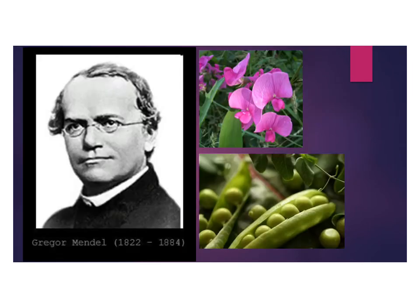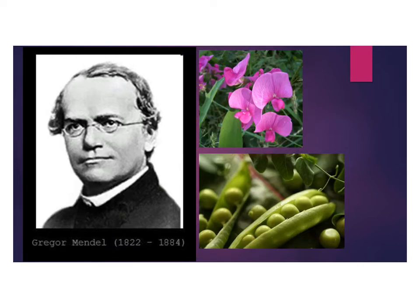Here's an image of Gregor Mendel. He lived between 1822 and 1884. He was a monk in Austria and he worked in the gardens of the monastery, doing all of his work studying pea plants. He did numerous studies of the inheritance patterns of his peas, purposefully breeding them in certain ways, and he discovered a lot of very important things that we now understand about genetics.